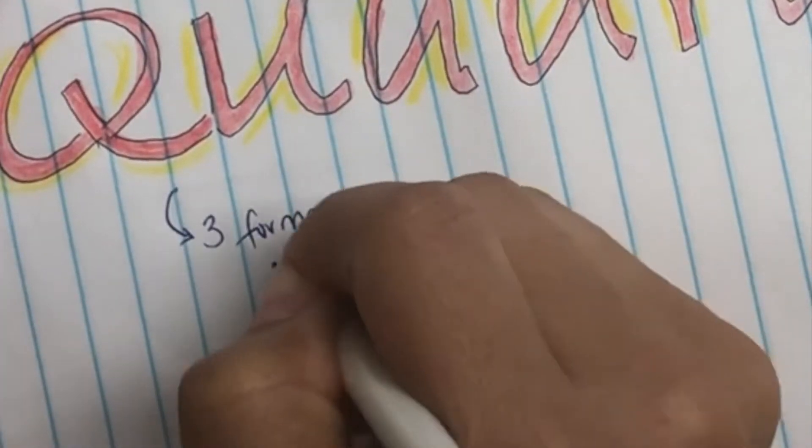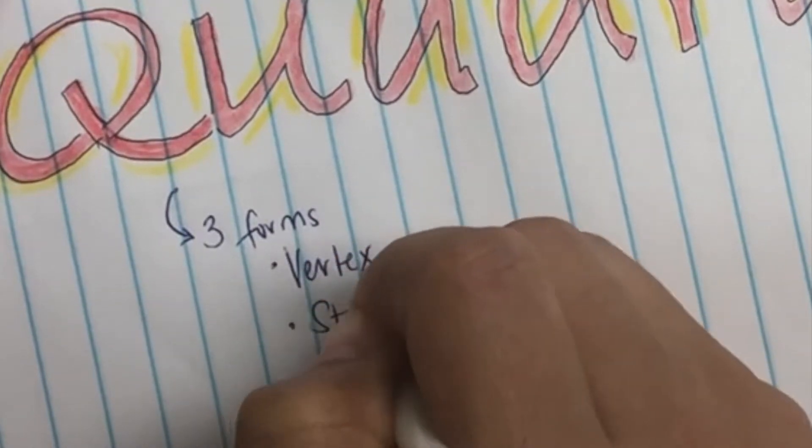There are three forms of quadratics. There is a vertex form, a standard form, and an intercept form.